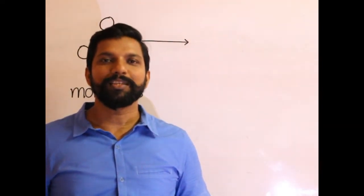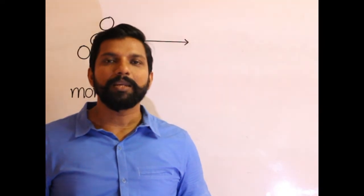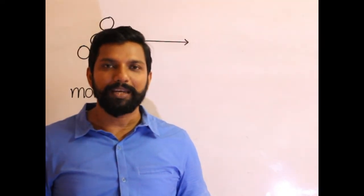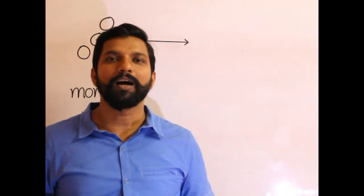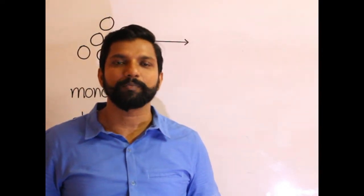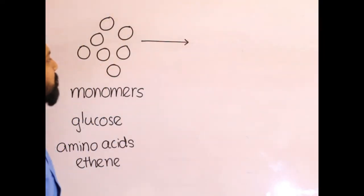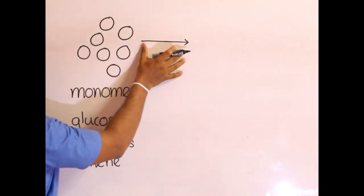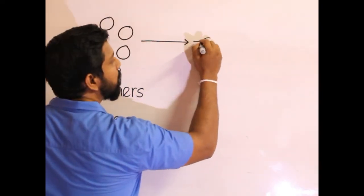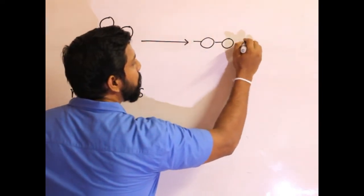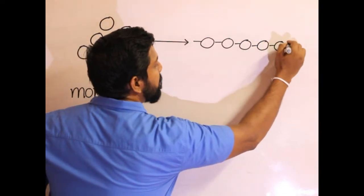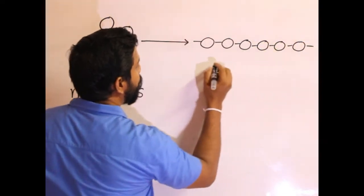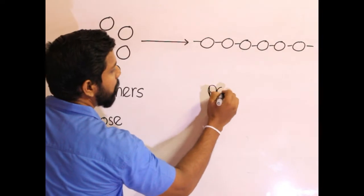This is a process in which many small molecules combine to form a large molecule with high molecular mass. These small molecules are called monomers, and they react together, connecting to each other to form a large molecule called a polymer.